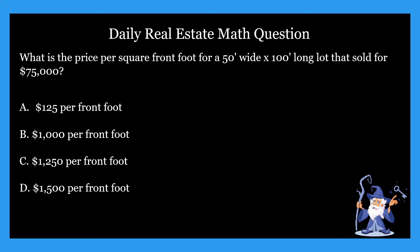So the problem says: what is the price per square foot for a 50-foot wide by 100-foot long lot that sold for $75,000? And it gives us four options: $125, $1,000, $1,250, and $1,500 per front foot. I'm going to give you guys an opportunity to pause here, go through it, and find your answer. So go ahead and do that right now, and then we'll meet up.